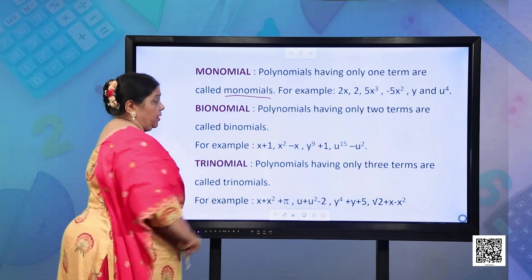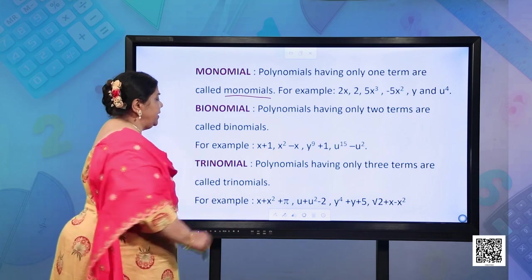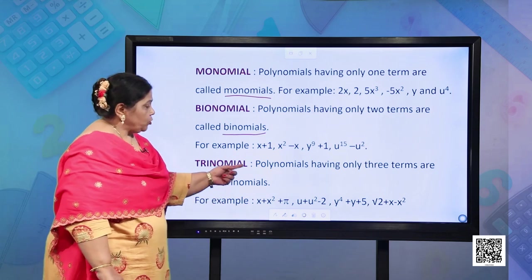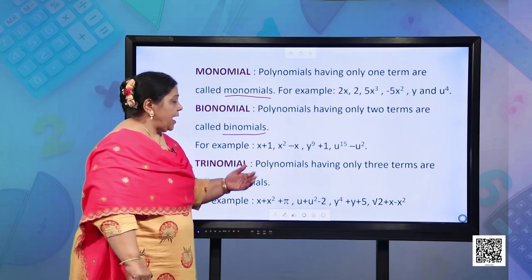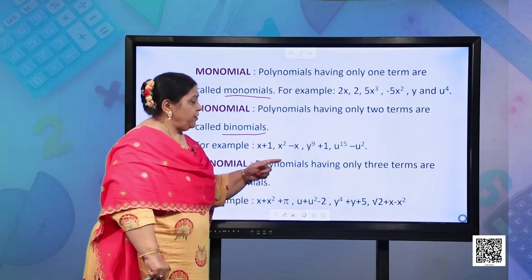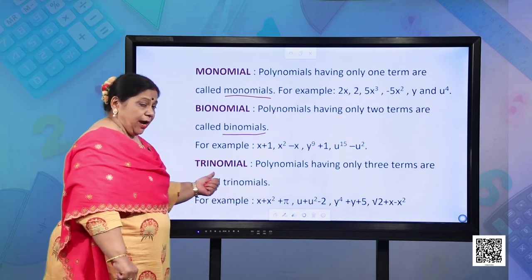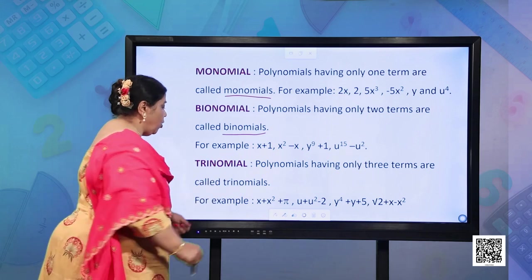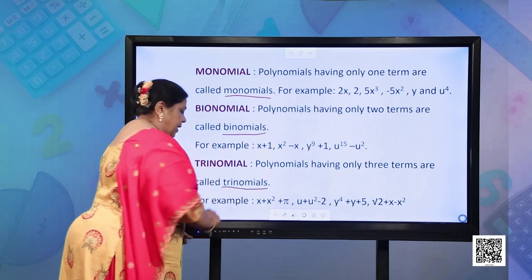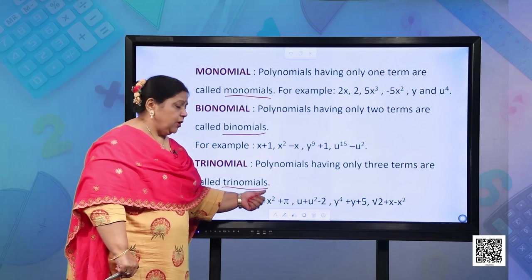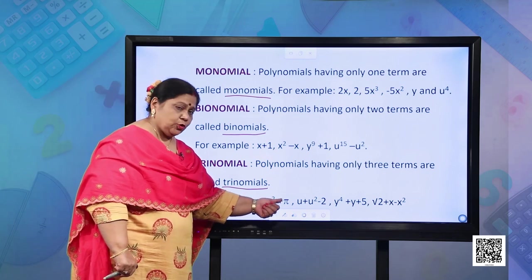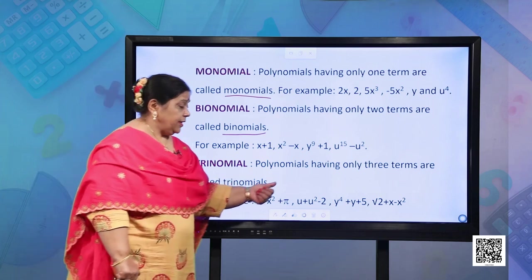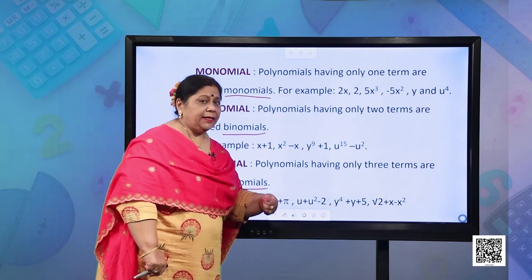What is a binomial? Polynomials having only two terms are known as binomials. For example, x+1, x²−x, y⁹+1, u¹⁵−u². What is a trinomial? Polynomials having only three terms are called trinomials. For example, x + x² + π, u + u² − 2, y⁴ + y + 5√2 + x − x².